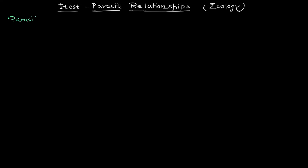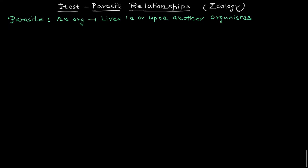In many books this topic is also written as the ecology of the host-parasite relationship. First we need to understand the parasite. A parasite, as we have already discussed, is an organism which lives in or upon another organism. That is important — in or upon means a parasite can live inside or it can live on the surface. Based on these two terms we divide parasites into two different categories, but before that we need to understand what a parasite does to the host.